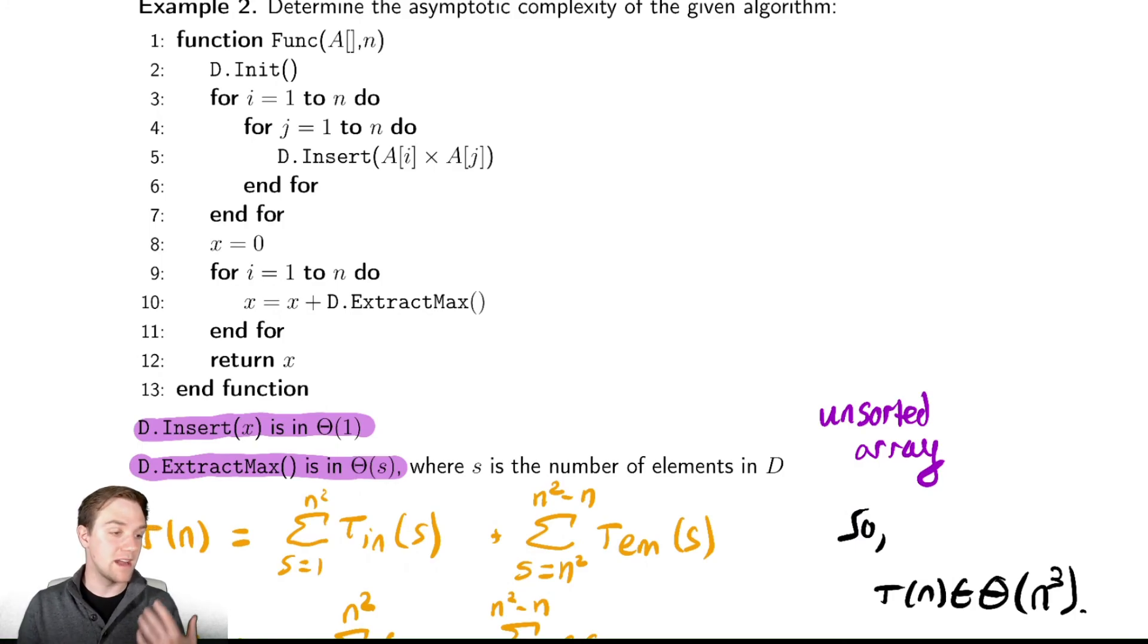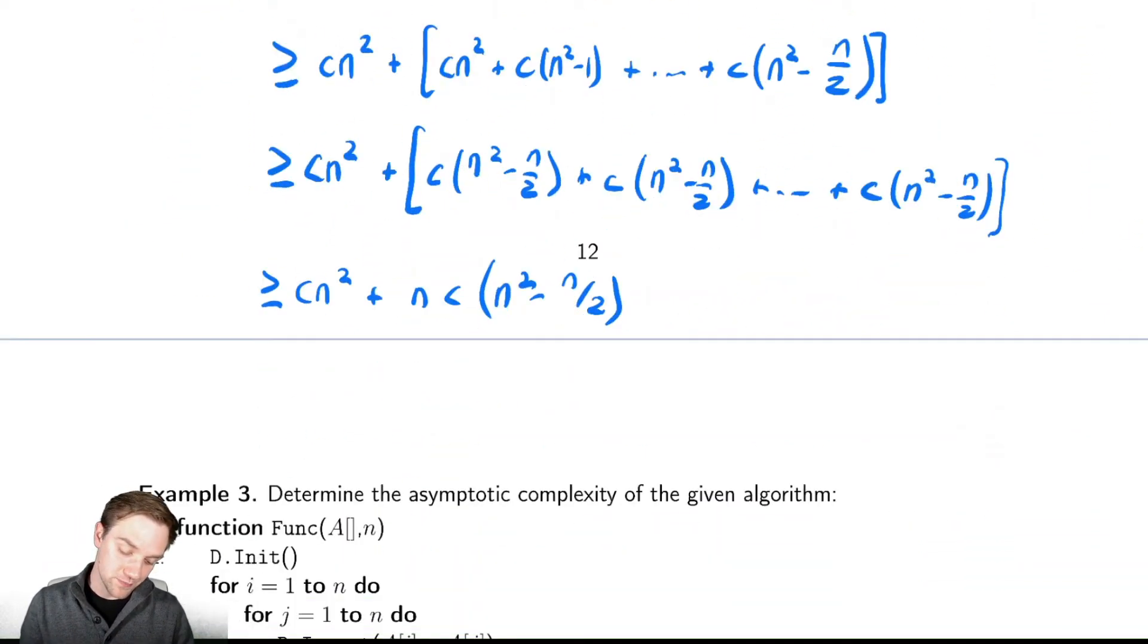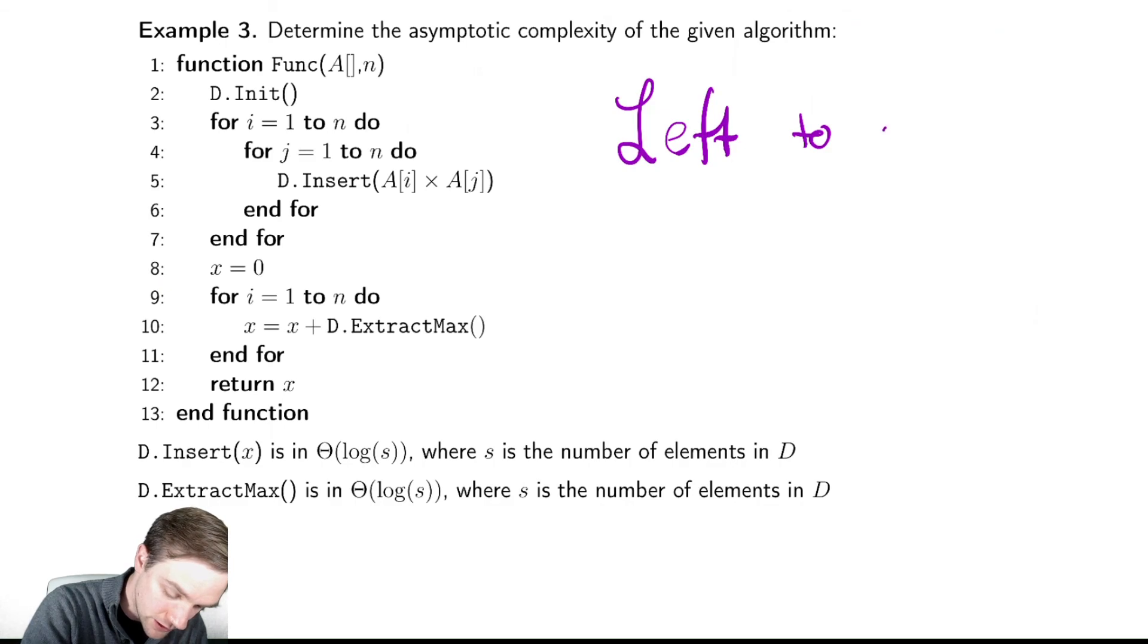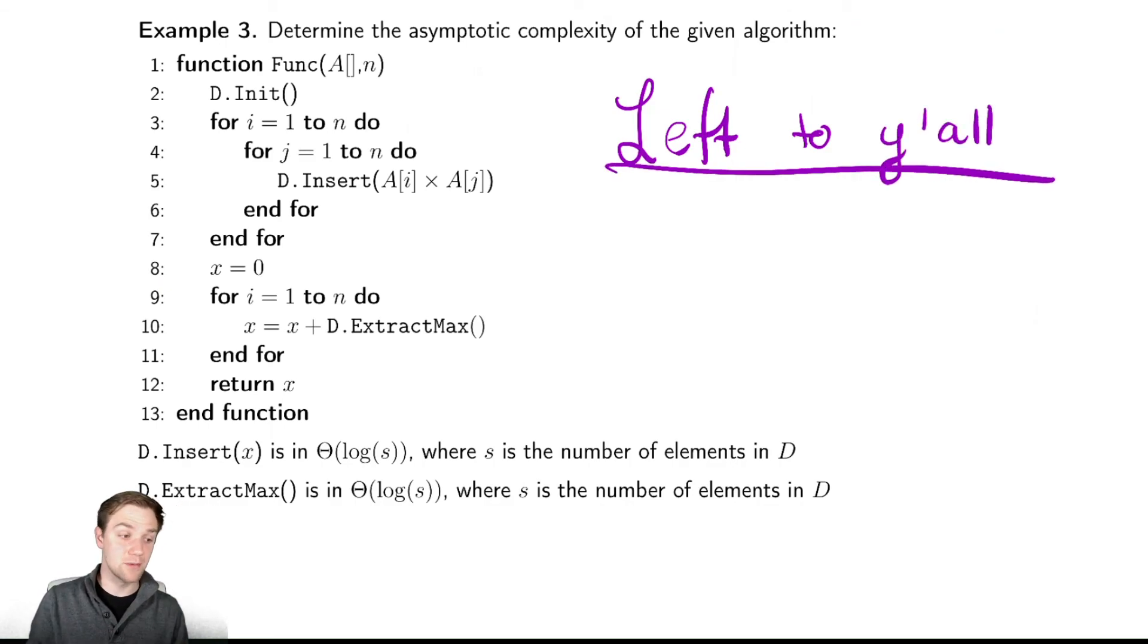And one might naturally ask, well, we did the sorted array and the unsorted array, are we going to do the heap. The heap will be down here, and I will leave that for you guys to practice with on your own. So this one is constantly left to you to work on. So this is left to y'all. And that is the last thing we're going to talk about for analyzing priority queues and our brief foray into analyzing algorithms involving data structures here at the end.